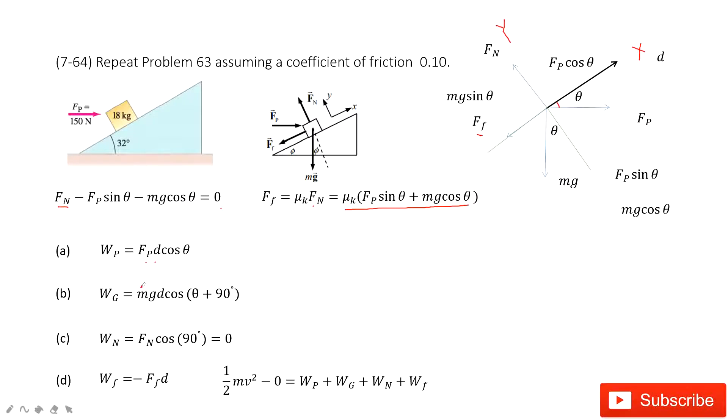The next one asks you to find the work done by gravity. Similarly, the gravity mg and the distance it moved is d. This one is 90 degrees. So the angle between mg and d is 90 degrees plus theta. Therefore, we have the work done by gravity is mg times d times cosine of theta plus 90 degrees.